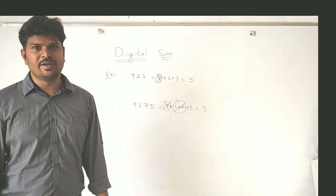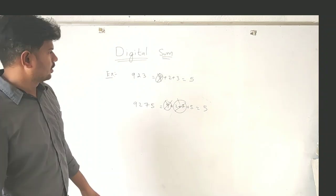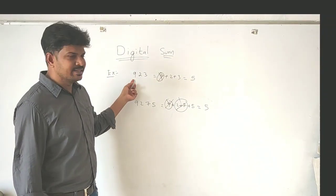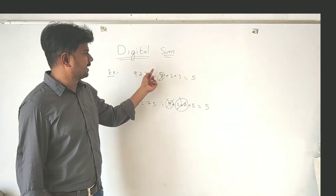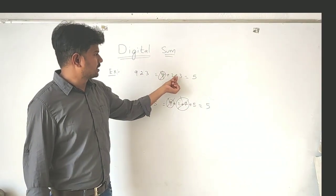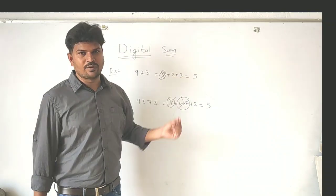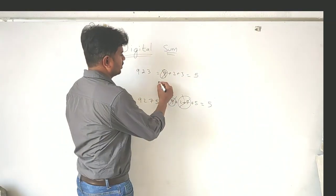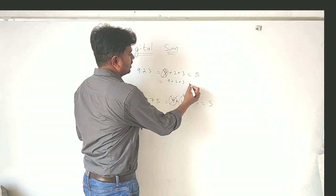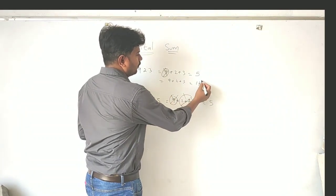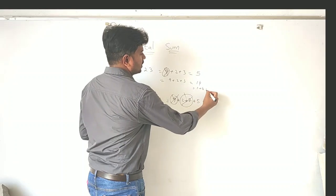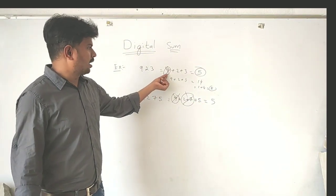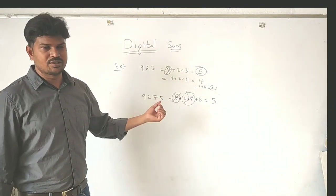Let's see an example of the ignore-9 concept. For finding the digital sum of 9, 2, 3: since 9 is included, ignore it while calculating. So 9 plus 2 plus 3 — ignore the 9 — and 2 plus 3 equals 5. If you include 9, it becomes 9 plus 2 is 11, plus 3 is 14, and 1 plus 4 also equals 5. So you get the same answer — that's why ignoring 9 gives a faster, speedy result.